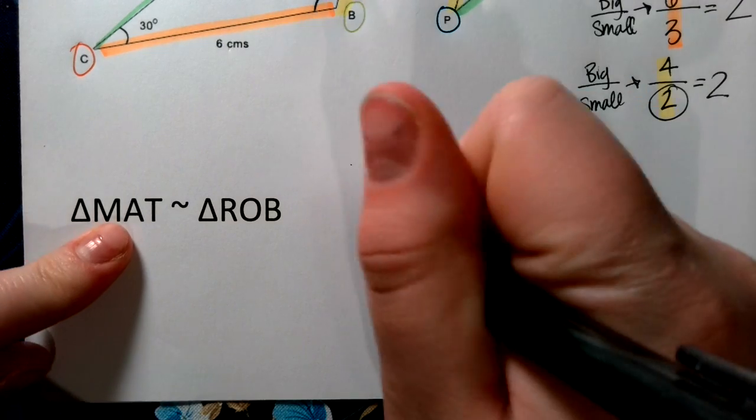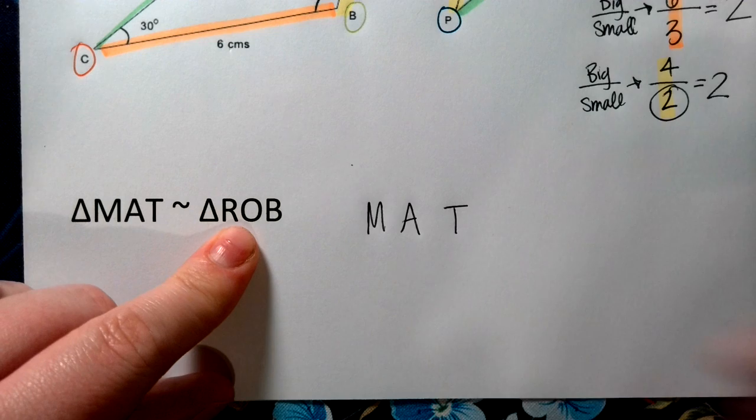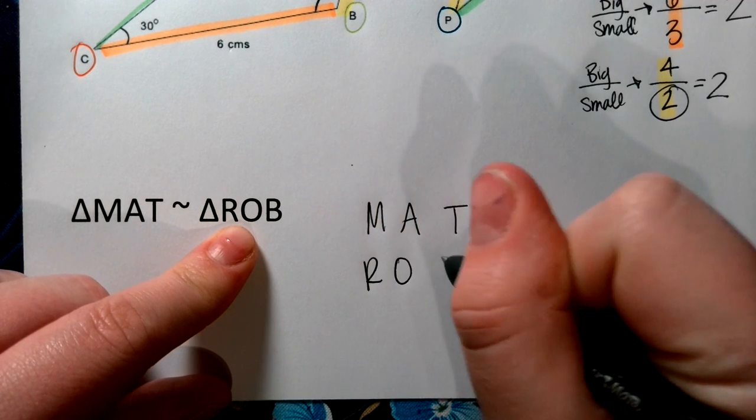So I want to stack triangle M, A, T, triangle MAT, and triangle R, O, B.